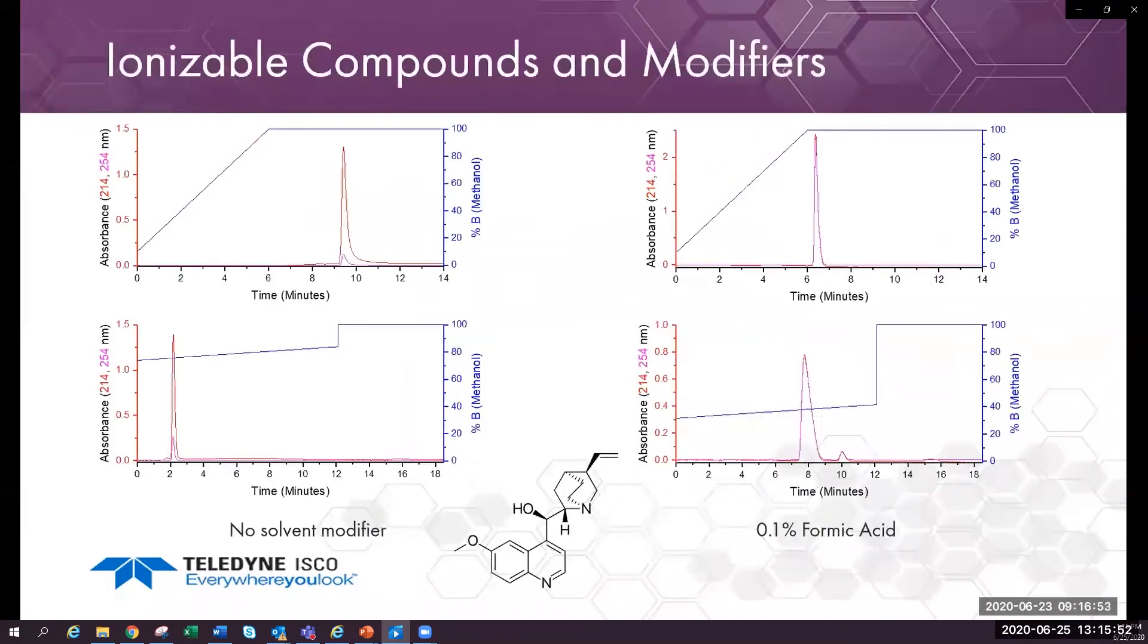Let's take a look at an alkaloid quinine in this sample. The top runs are scouting gradient runs and the bottom runs are calculated gradients. Quinine elutes too early in the prep run without a modifier in the lower left corner. Note that if you change the solvent or modifier, you will need to run another scouting gradient. See the differences in retention times in the scouting runs above. This is true for any of the methods that we looked at earlier.